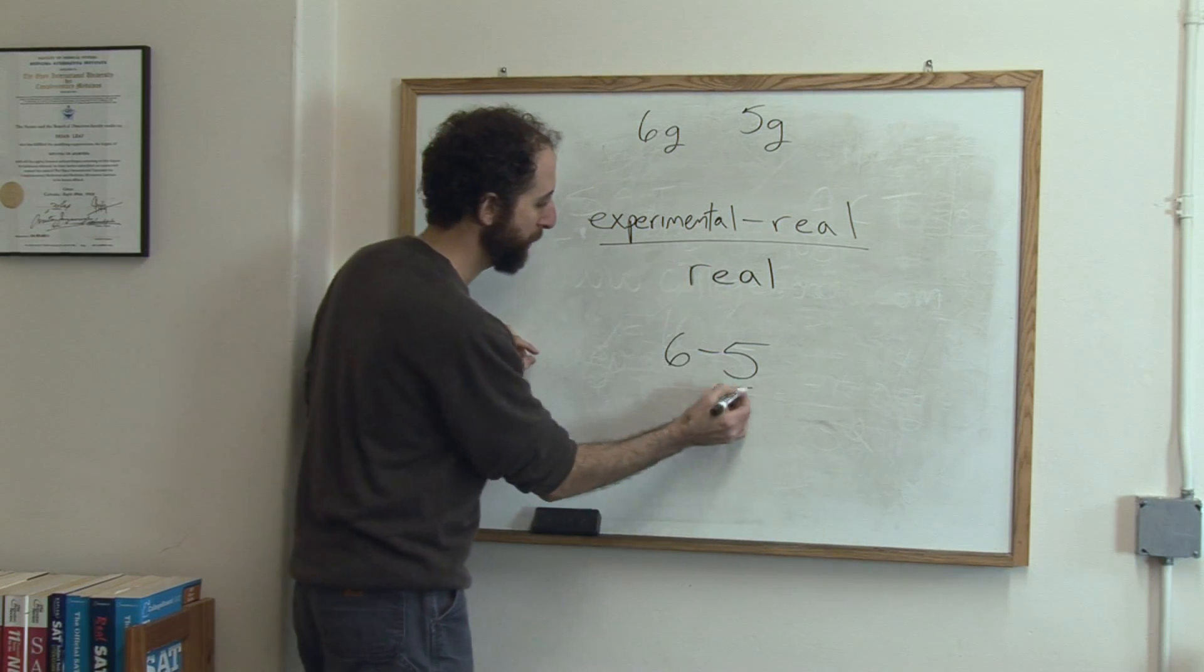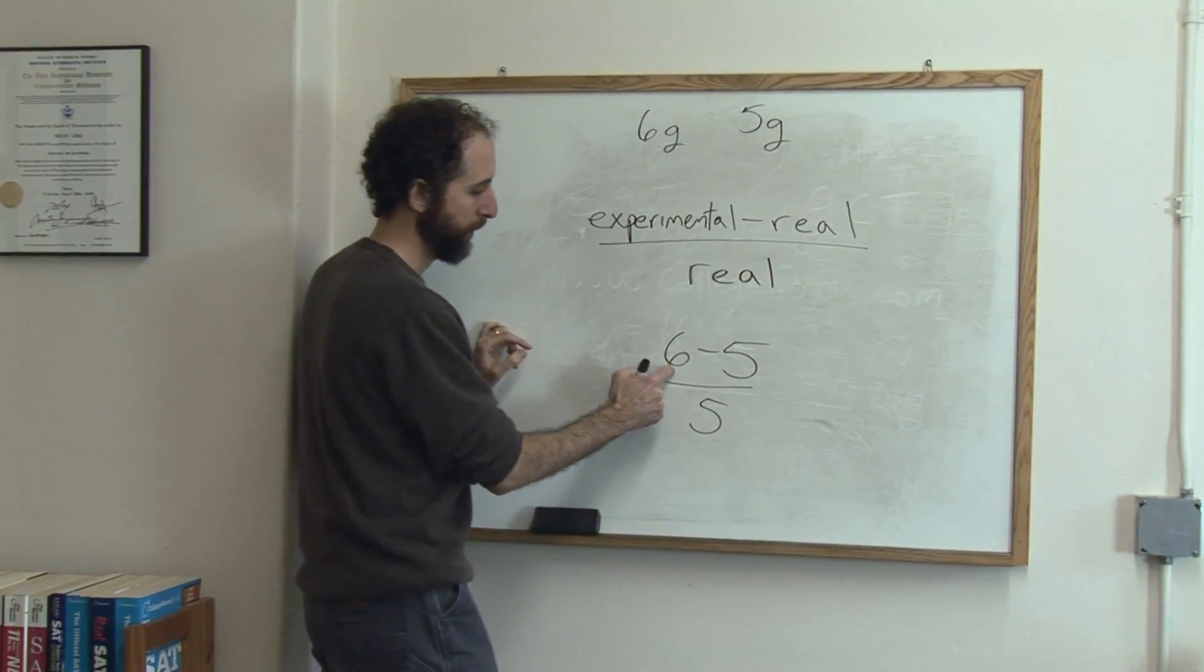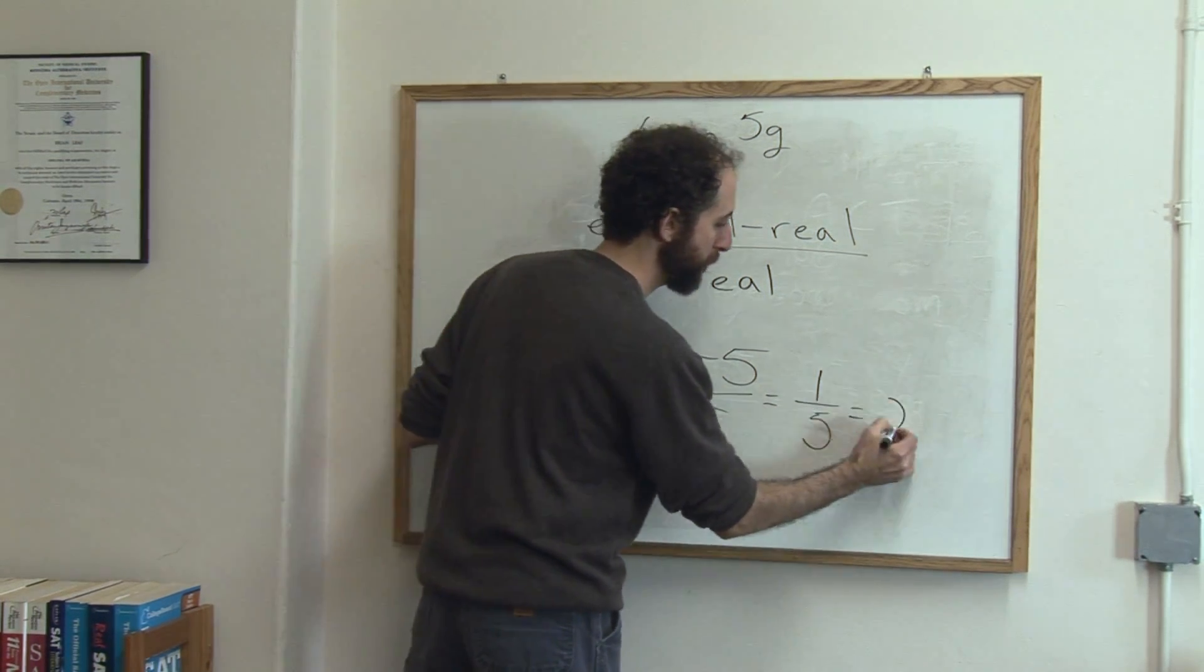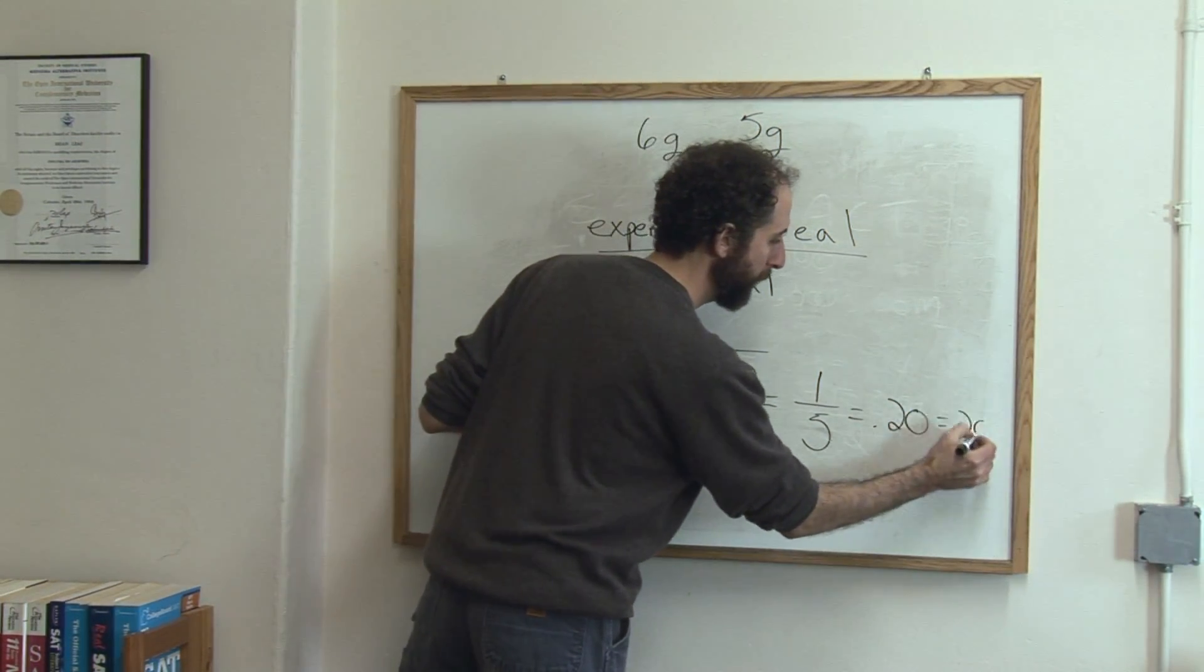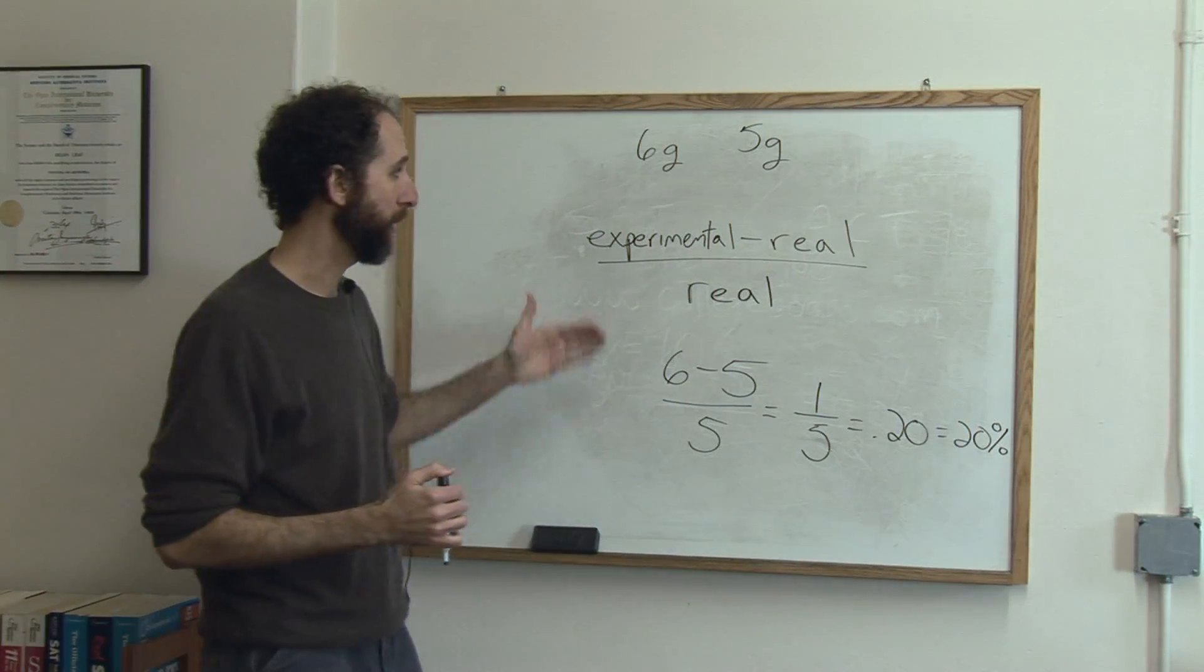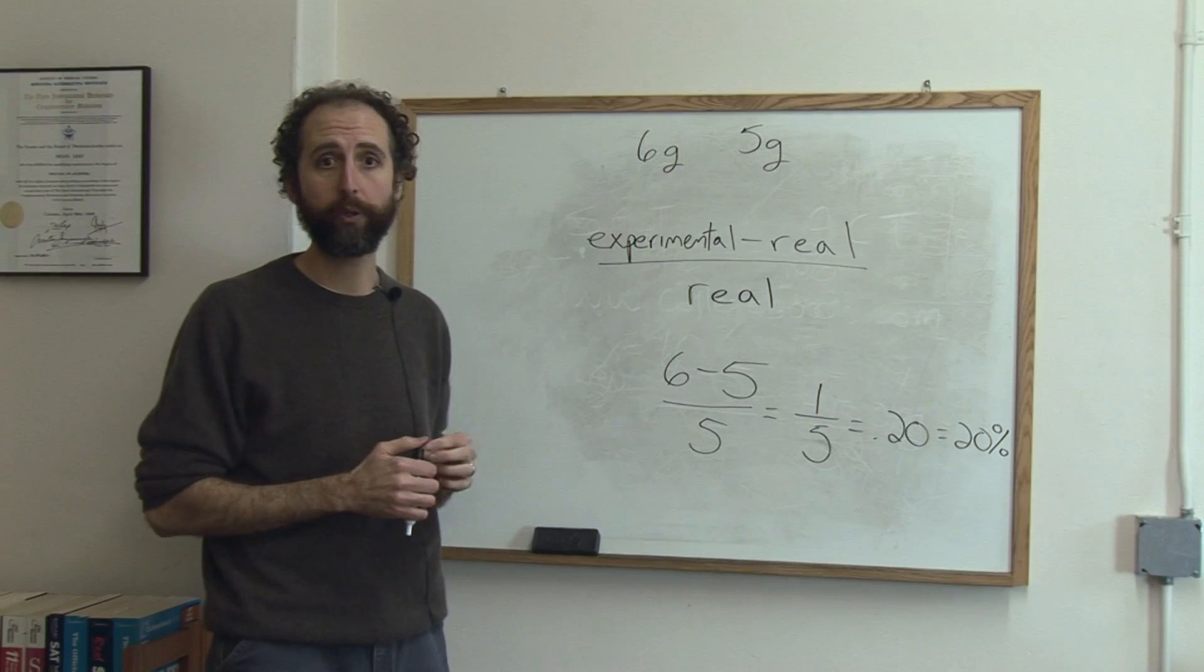And then divided by real. So six minus five is one over five, which is 0.2 or 20%. That tells us that the relative error was 20%. You were 20% off from the real number.